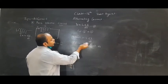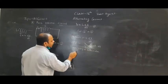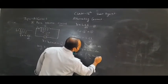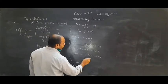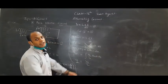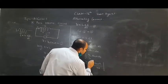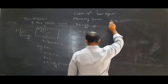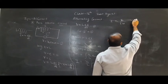Integrating both sides: I = (V₀/L) × ∫sin(ωt)dt. The integration of sin(ωt) is −cos(ωt)/ω. So I = (V₀/Lω) × (−cos(ωt)). Thus I = −(V₀/Lω)·cos(ωt).